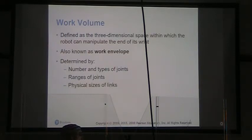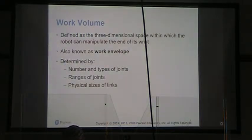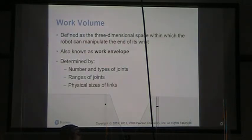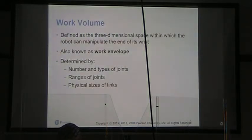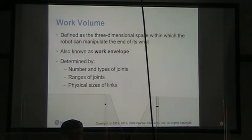The work volume — also called the work envelope — is the three-dimensional space within which the robot can manipulate the end of its wrist. This is no different than when we talk about human beings at a workstation. It is determined by the number and types of joints, the ranges of the joints, and the physical sizes of the links.